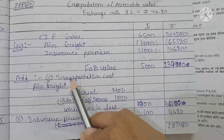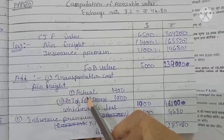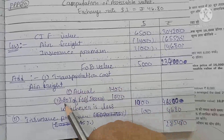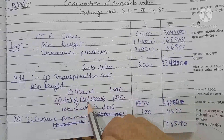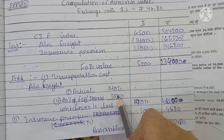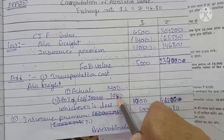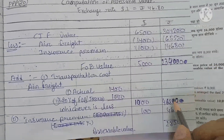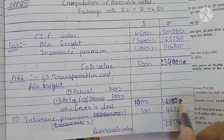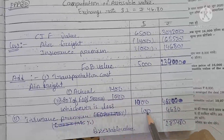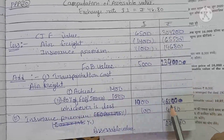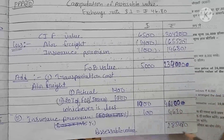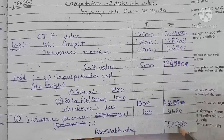We have to add transportation cost because it was air freight, so we have to compare the actual rate with 20% of FOB. The actual rate was $1,400. 20% of FOB $5,000 = $1,000, which is smaller, so we take $1,000 into ₹46.8 = ₹46,800. The insurance premium is $100 into ₹46.8 = ₹4,680.